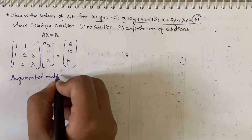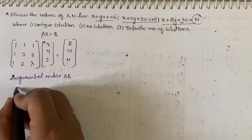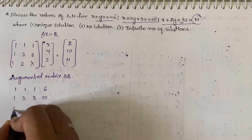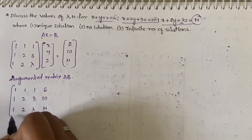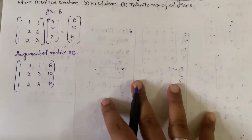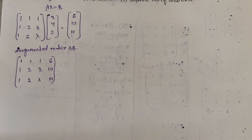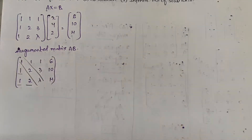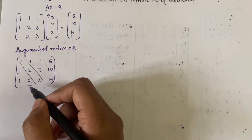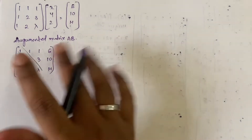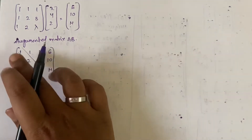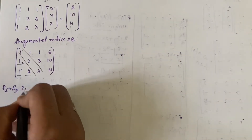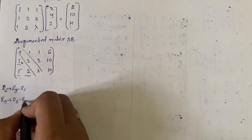The augmented matrix [A|b] is: [1 1 1 6 / 1 2 3 10 / 1 2 λ μ]. Now for the echelon form, we identify the diagonal elements and mark the elements below the diagonal that need to be made zero. The operations are: R2 → R2 − R1 and R3 → R3 − R1.